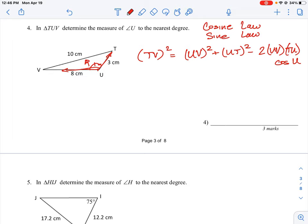So what we're asking to actually find here is we need to isolate cosine U and then figure out what the value is for angle U. So if we plug in our numbers here, we know TV is 10 squared, UV is 8 squared, UT is 3 squared. So remember, we're summing the squares, and then we're subtracting two times each of the legs.